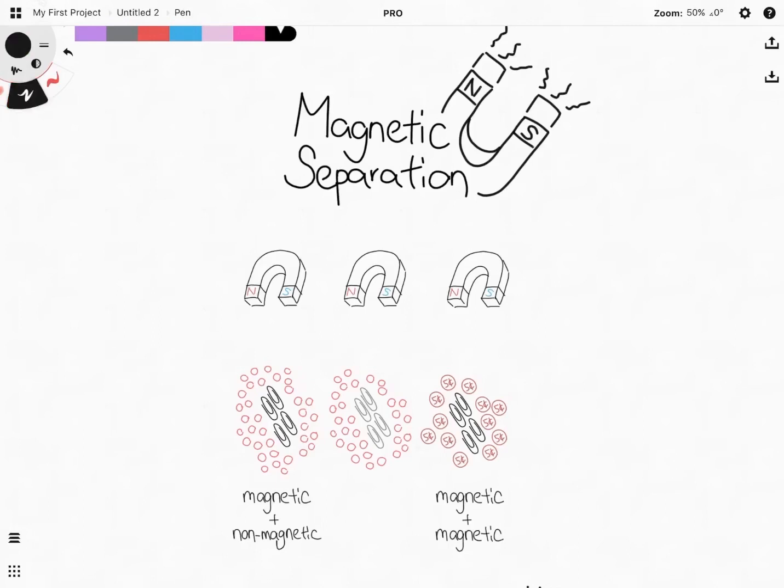Or sometimes you may be referring to it as magnetic separation. The idea of separation by magnetism is that you want to separate things that are magnetic from things that are not magnetic.